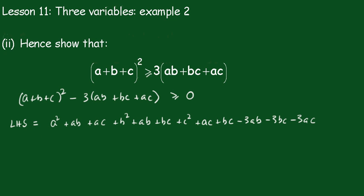So you get that result there. Now, what happens next — you'll notice that you've got an ab here, an ab here, and a minus 3ab here. So you'll get a squared plus b squared plus c squared, and this will give us a minus ab, and similarly, a minus ac and a minus bc.